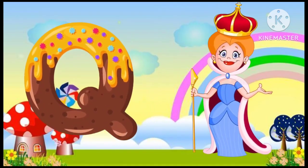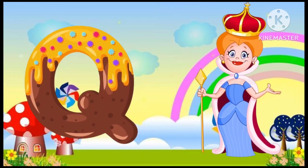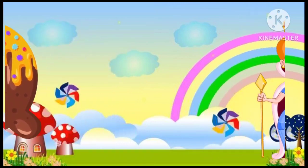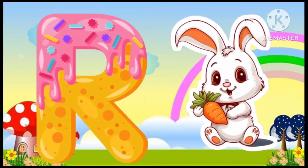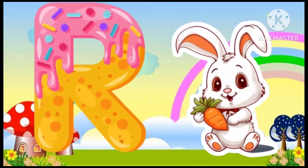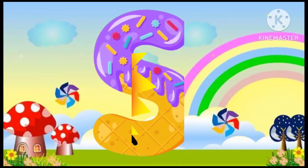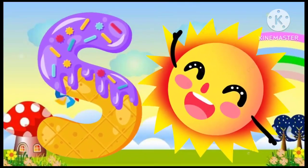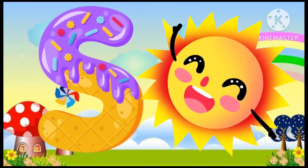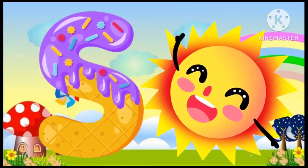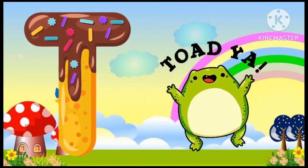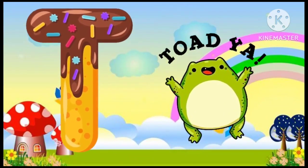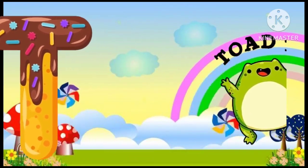Q is for queen, qu-qu-queen. R is for rabbit, r-r-rabbit. S is for sun, s-s-sun. T is for toad, t-t-toad.